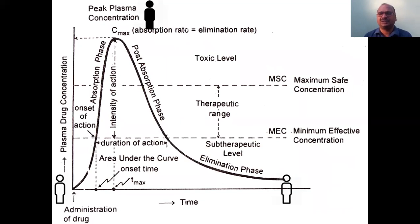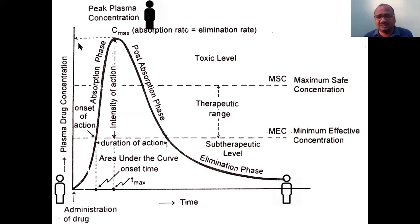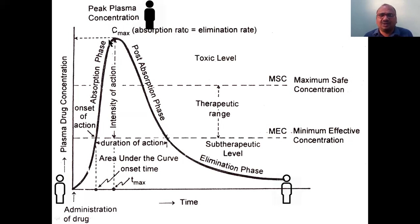All these terms are easy to understand once you picture the graph in your mind — you need not memorize definitions. This is the plasma drug concentration time profile. The drug is administered and concentration goes on increasing until it reaches the maximum concentration — this is called Cmax. The patient's body has the maximum concentration of drug at this point.